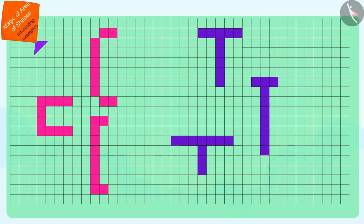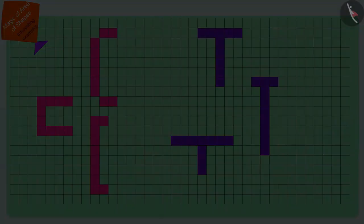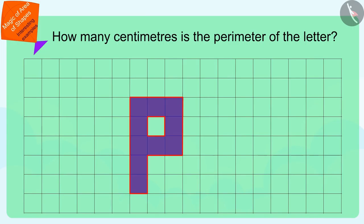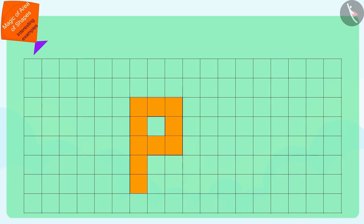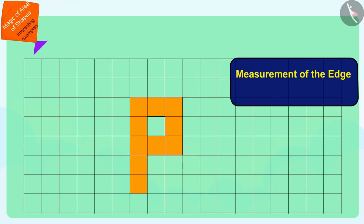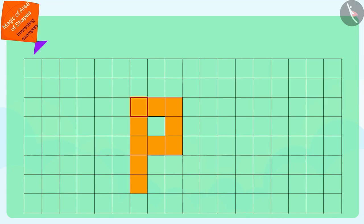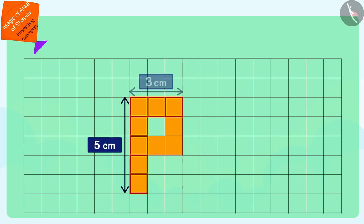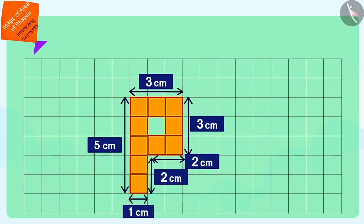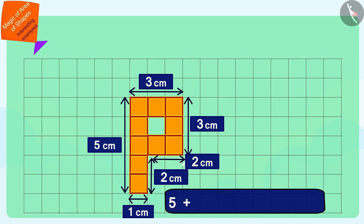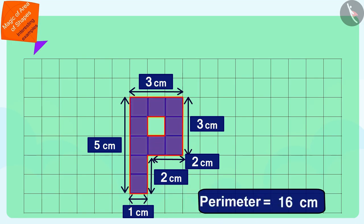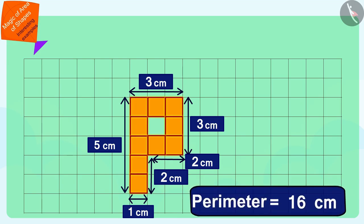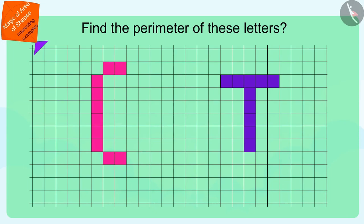Well done children. Let us see how many centimeters is the perimeter of P that Pinky has created. We can find it very easily. The measurement of the edge of a square is one centimeter, so to find the perimeter of this letter we only need to find the number of squares that fall in its edges and add the measurements of all those edges. In this way, perimeter of Pinky's letter P is 16 centimeters.